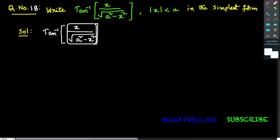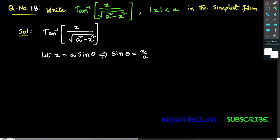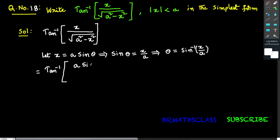To write x divided by root over a square minus x square in the form of tan theta, I will take x equals to a sine theta. From this, sine theta equals to x divided by a, and therefore theta equals to sine inverse of x by a. Now in the given expression, wherever x appears, I write a sine theta in its place.